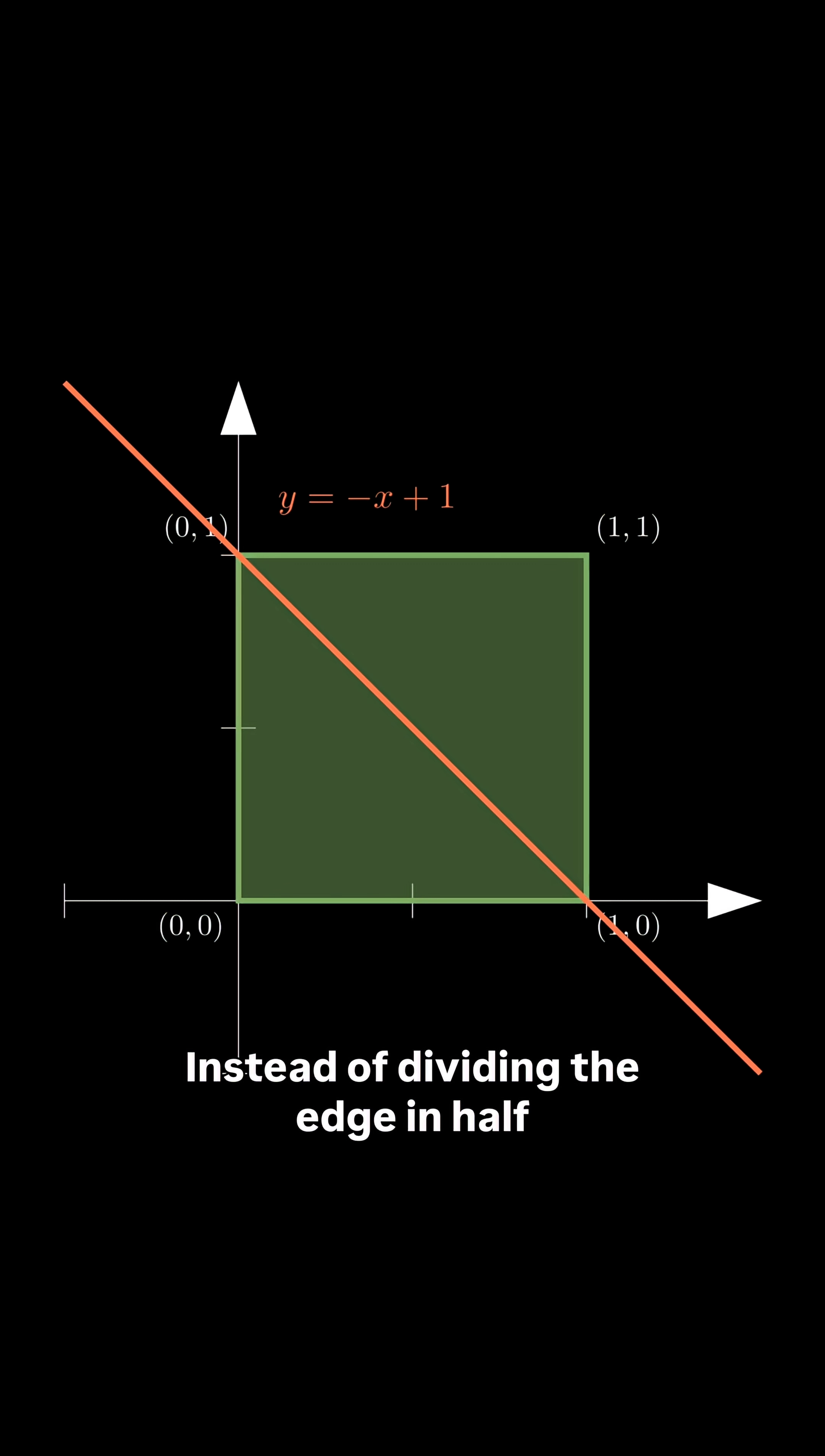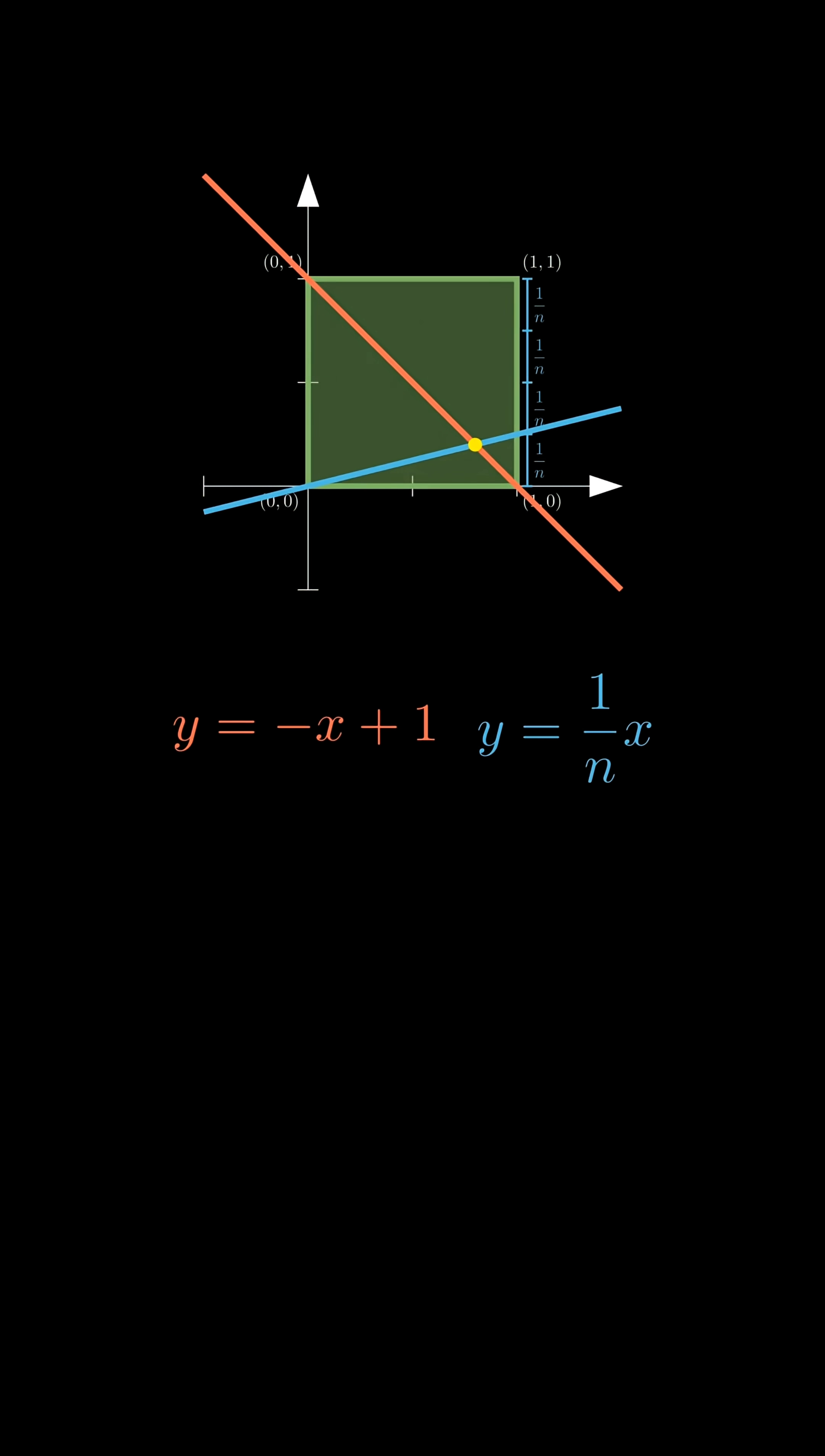Now let's generalize it. Instead of dividing the edge in half, let's divide the right edge into n parts. And we do the same algebra. And this time, we get a denominator of n plus 1.